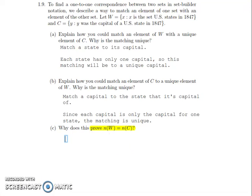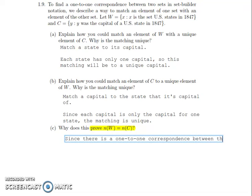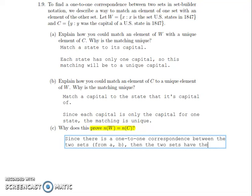Since there is a one-to-one correspondence between the two sets from parts A and B — and it never hurts to summarize and cross-reference what you've already done — the two sets have the same cardinality. And there's our solution to problem 1.9.